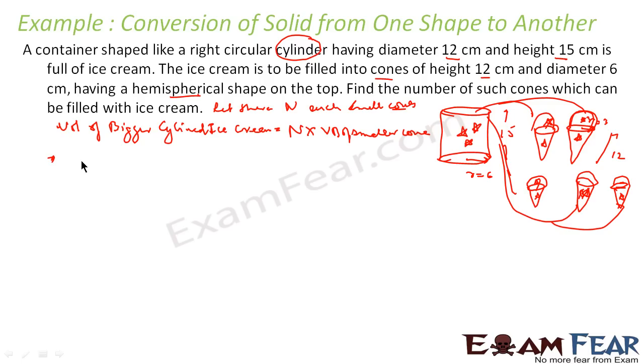So the volume of bigger cylinder is pi r square h. Let this be r1. And let the cone be r, just to make my life simple. So pi r1 squared into h1 will be equal to n into, what is the volume of this cone? If you see this cone, this is not only cone, this is cone plus hemisphere. So the volume of ice cream is volume of cone plus hemisphere.